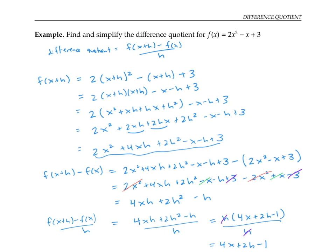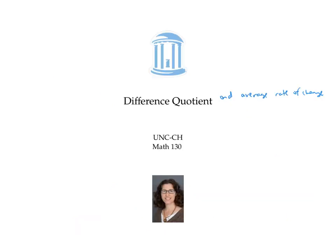This difference quotient will become important in calculus. When we calculate a difference quotient for smaller and smaller values of h, eventually letting h go to zero and ending up with an expression that has no h's in it, we get the derivative, or slope of the function itself. In this video, we used the formula f of b minus f of a over b minus a to calculate an average rate of change, and the related formula f of x plus h minus f of x over h to calculate and simplify a difference quotient.